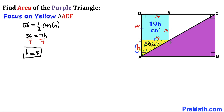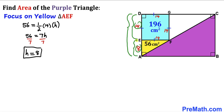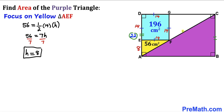We can now replace height h with 8 cm. Side length DE is 14 and side length EA is 8, so the whole side length AD is 14 + 8 = 22 cm. Since we're dealing with rectangle ABCD, side BC must equal side AD, so BC is also 22 cm.